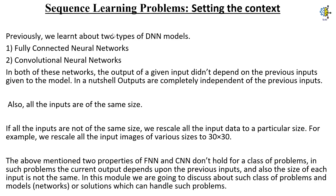If all the inputs are not of the same size, we rescale all the input data to a particular size. For example, we rescale all the input images of various sizes to 30 by 30. The above mentioned two properties of FNN and CNN don't hold for a class of problems. In such problems, the current output depends upon the previous inputs and also the size of each input is not the same. In this module, we are going to discuss about such class of problems and models for solutions which can handle such problems.